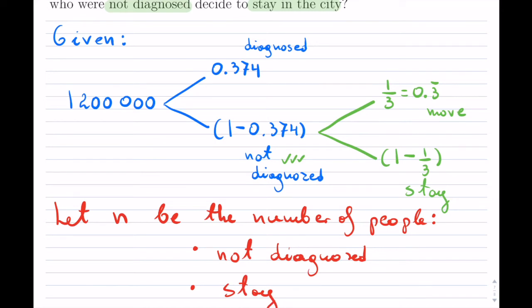So if we take our path here, from the starting point, not diagnosed, that's this right here. And then stay, so we continue, stay is right here. So that's that.